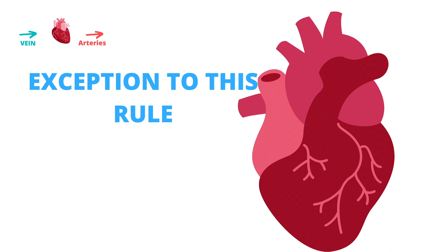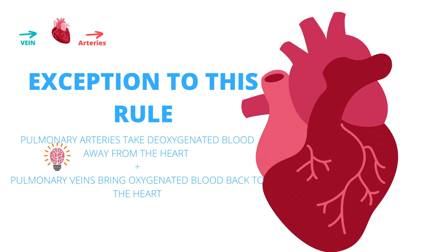There is an exception to this general rule, and this exception involves the pulmonary system. The right and left pulmonary arteries take deoxygenated blood away from the heart, while the pulmonary veins bring oxygenated blood back towards the heart.